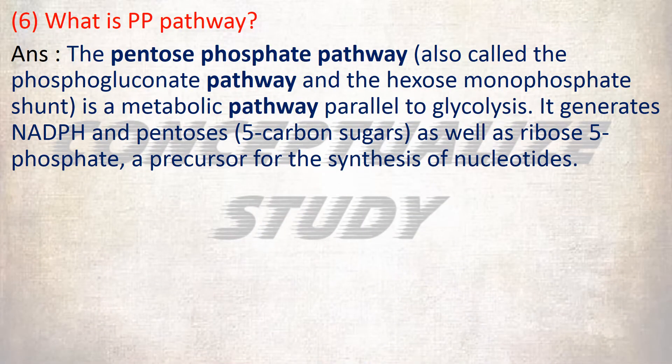Next is: what is the PP pathway, or pentose phosphate pathway? The pentose phosphate pathway, also called the phosphogluconate pathway and hexose monophosphate pathway, is a metabolic pathway parallel to glycolysis. It generates NADPH and pentoses (5-carbon sugars), as well as ribose 5-phosphate, a precursor for the synthesis of nucleotides.